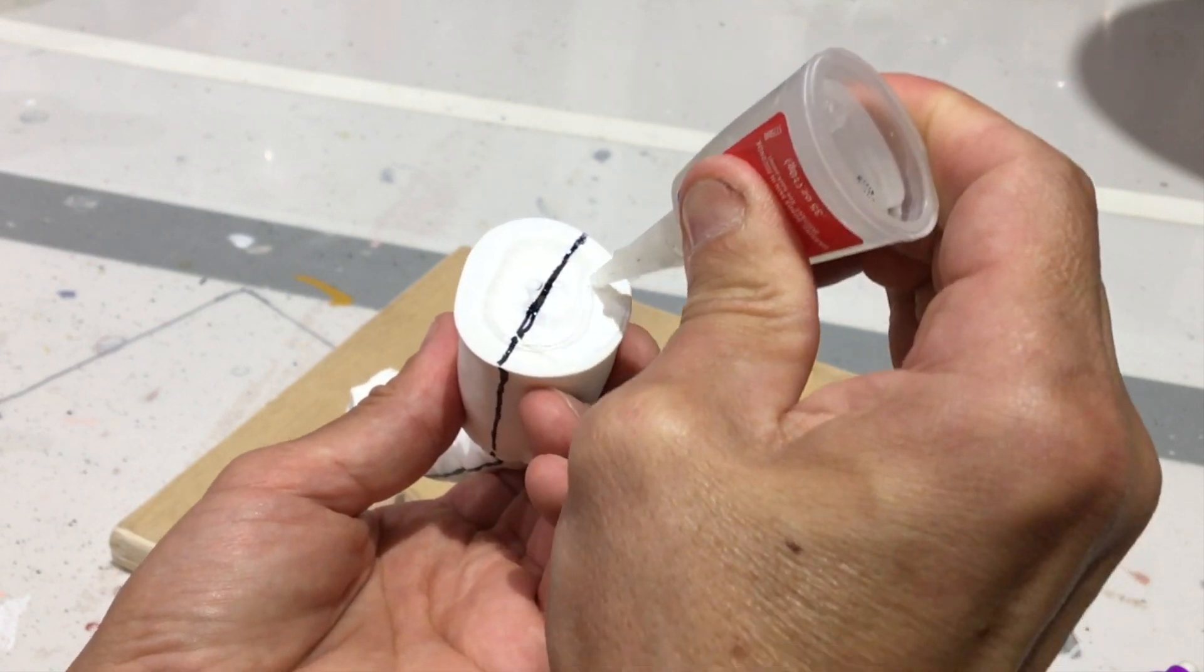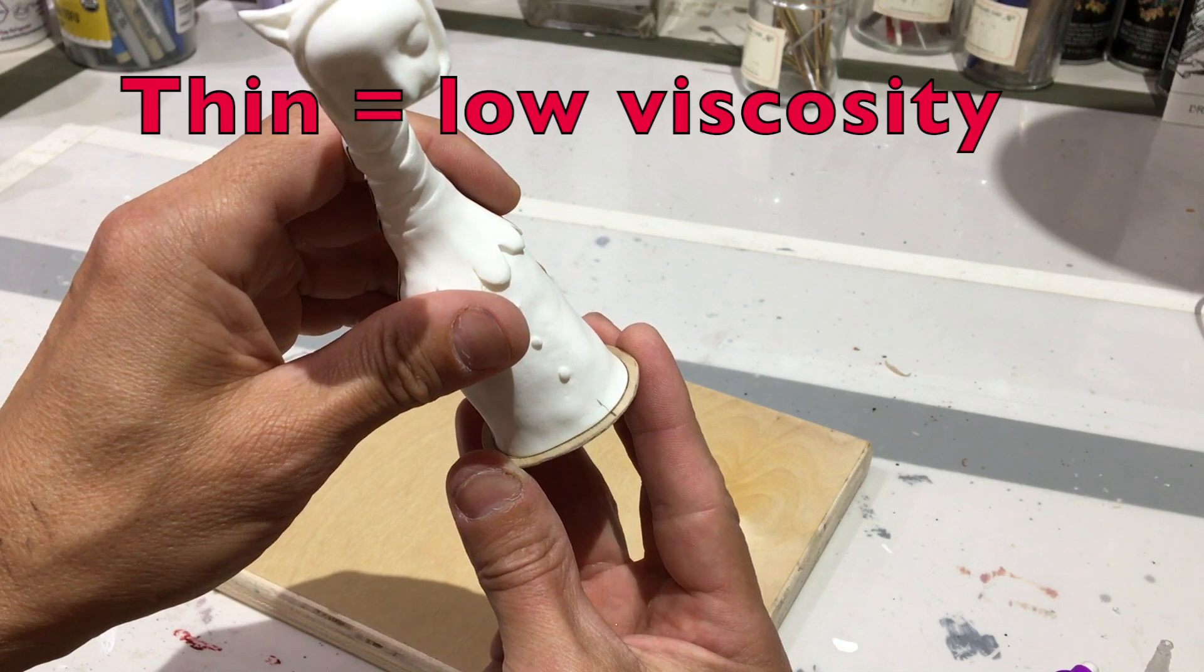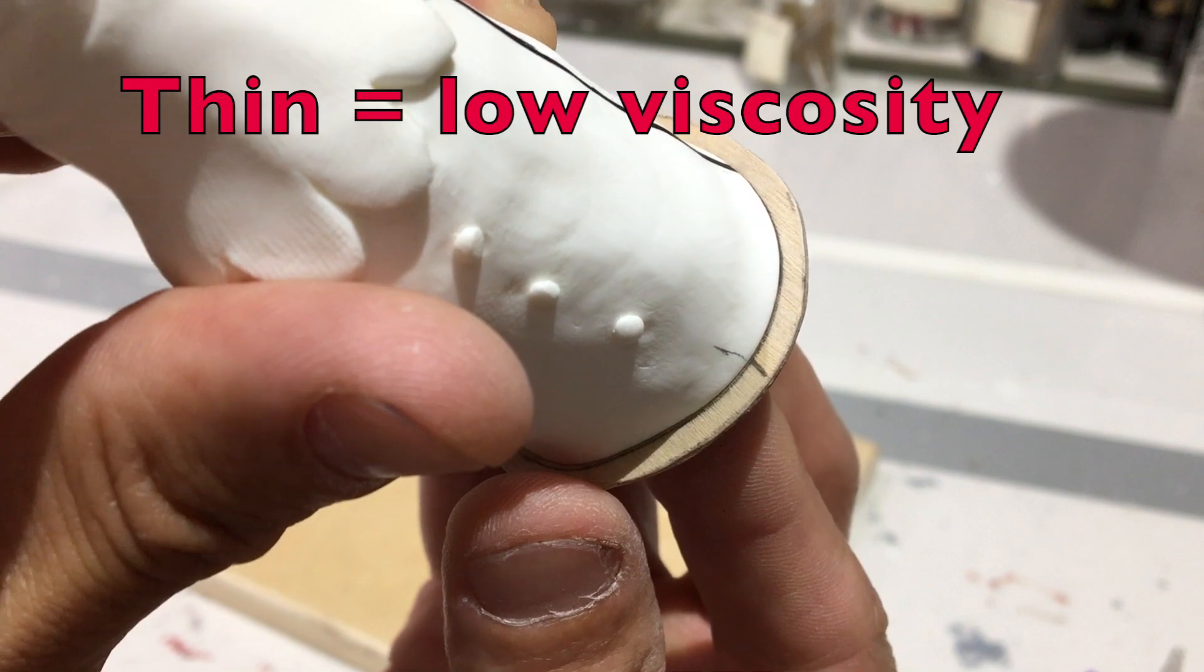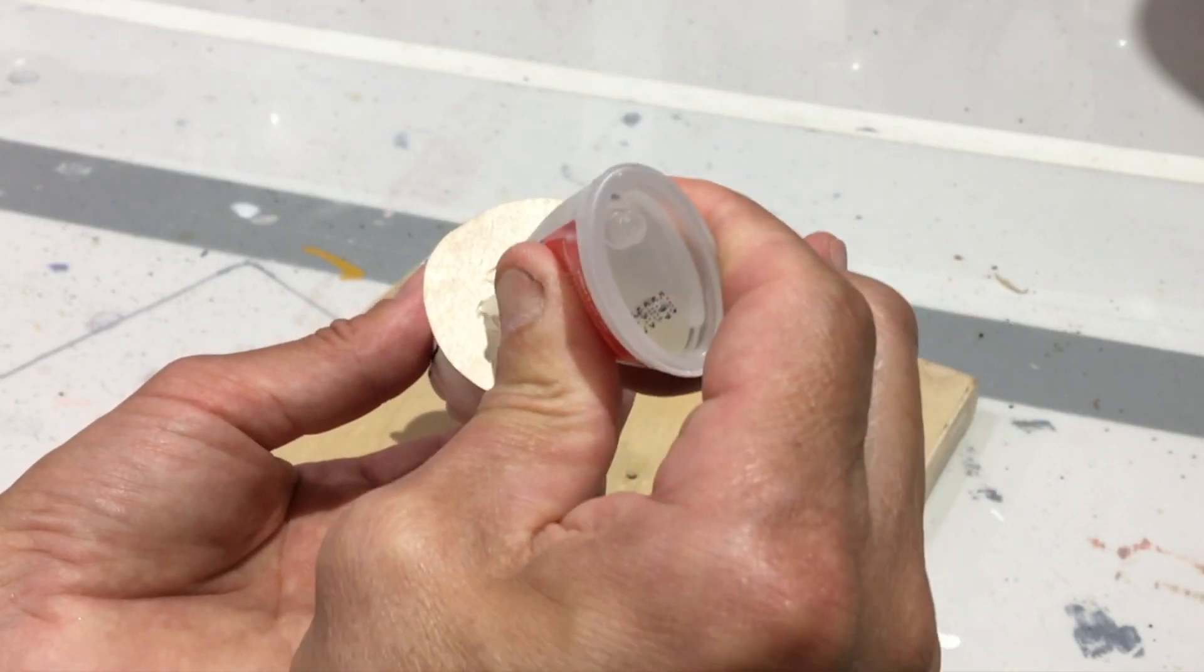You want to use a thin glue here because you don't want to create any gaps between the wood and the piece or the mold board. So don't use a glue stick for this. That will not give you a tight fit.